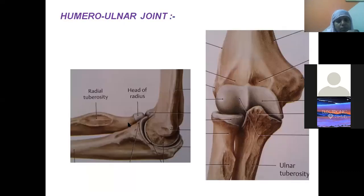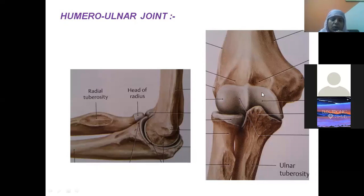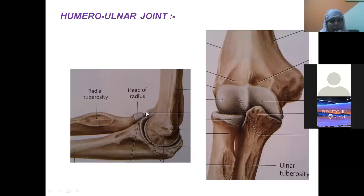A close-up picture shows the superior aspect of the head of the radius, capitulum, trochlear notch, trochlea, coronoid fossa, radial fossa, medial epicondyle, lateral epicondyle — and from the side view, the fixing of the trochlear notch into the trochlea and the head of the radius into the capitulum.